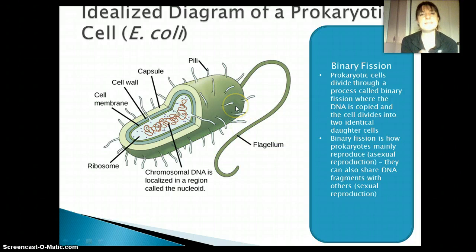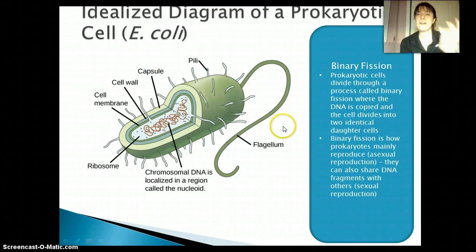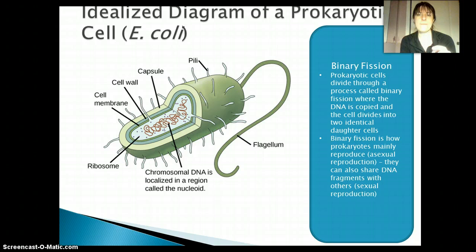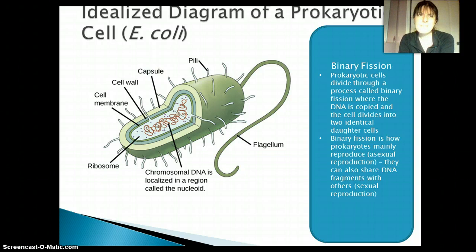The last thing I want to talk about is bacterial reproduction. Bacteria divide primarily through binary fission — asexual reproduction where a single bacterium just breaks into two, and they're going to be exactly the same. If they do sexual reproduction, it's called conjugation, and they share just little bits of DNA before dividing into two. So they don't have full sexual reproduction as we do in many eukaryotic cells.